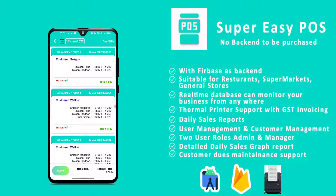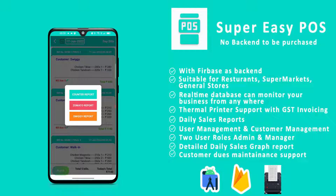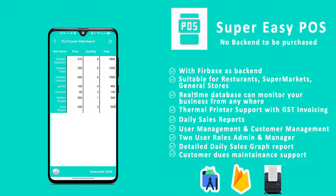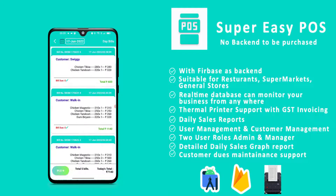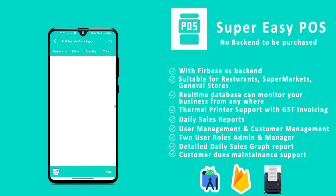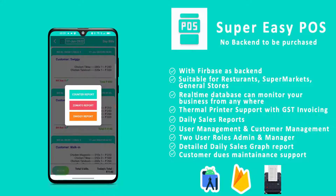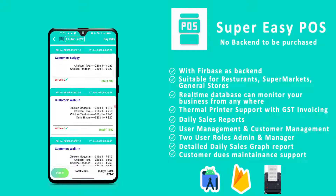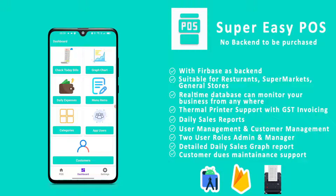The next option is PLU — Price Look Up, which is actually a counter report. Clicking it gives three sub-options: Counter Report, Zomato Report, and Swiggy Report. The Counter Report shows all items sold at the counter, their quantities sold for the full day. You can also print this report directly from the screen. Similarly, you can check Zomato and Swiggy reports — for example, Swiggy shows items sold while Zomato shows none sold today.